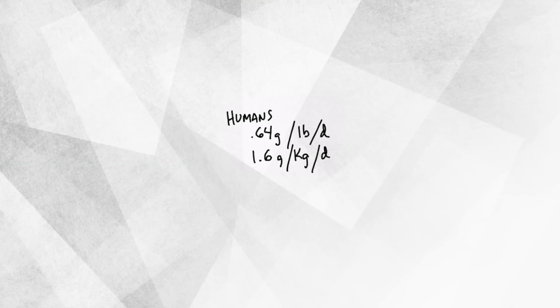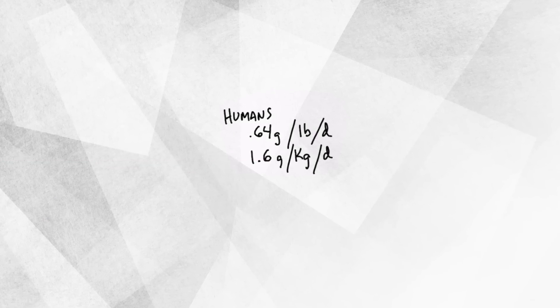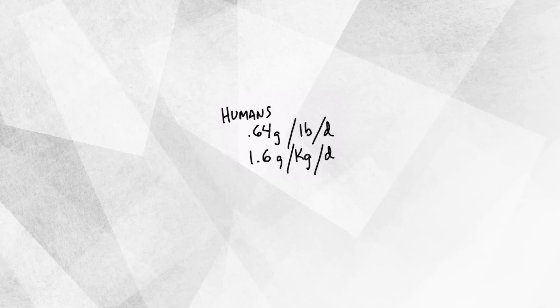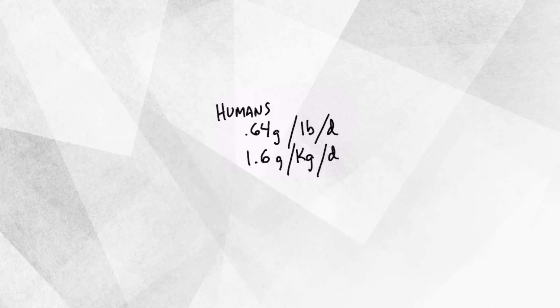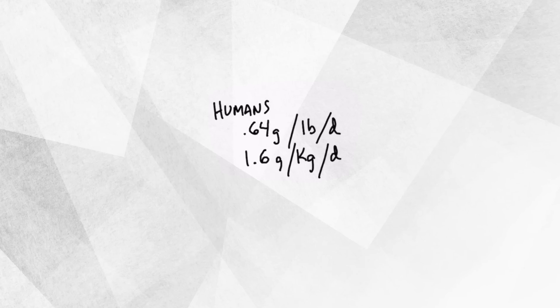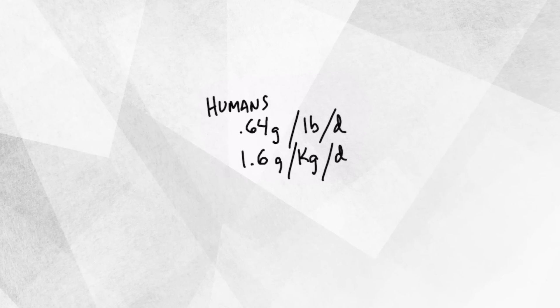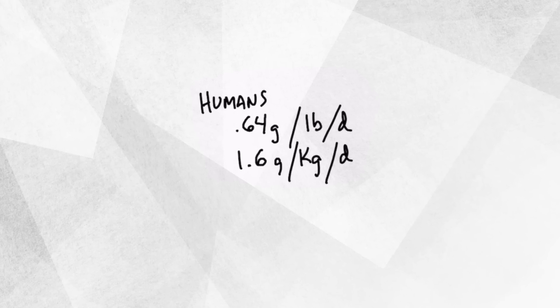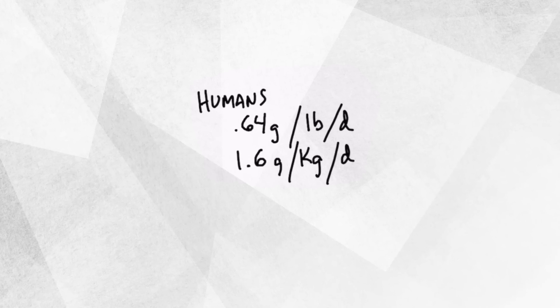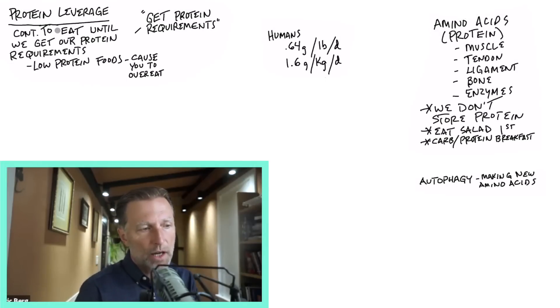And as far as human requirements goes, if we're looking at pounds, you would multiply 0.64 times how much you weigh, and that would be the number of grams of protein you would need per day. If we're talking about kilograms, you would multiply 1.6 times your kilograms in weight, and that's how many grams of protein you need per day. Now that's just on average. It could be a little bit more if you're younger and you're an athlete, could be a little bit less.